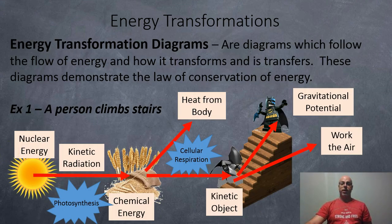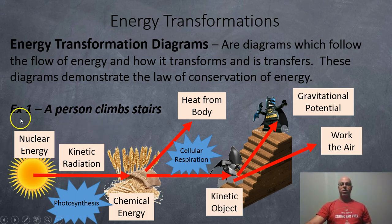So energy transformation diagrams. These are diagrams which follow the flow of energy and how it transforms and transfers. These diagrams demonstrate the law of conservation of energy. So for example, a person climbing some stairs. You could go all the way back to the sun if you want. So the sun has nuclear potential energy.